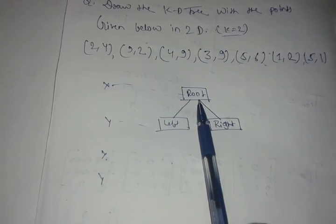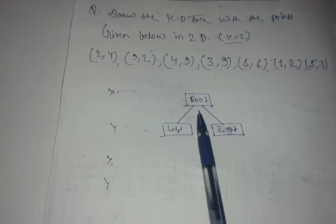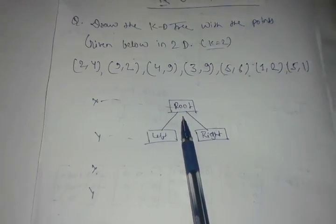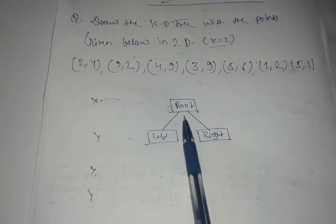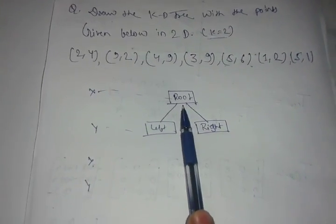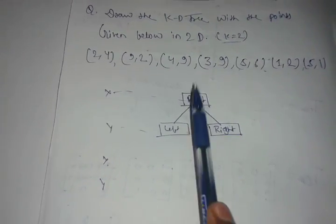And if the node that you are checking is greater than the root node or whatever node you are checking, that will be on the right side. So nodes greater than this node are on the right, and nodes less than this node will be on the left.